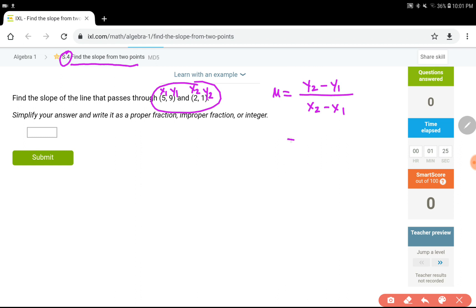Here, we plug in the numbers that we have. Y2 is 1 minus y1 is 9 divided by x2 is 2 minus x1 is 5.